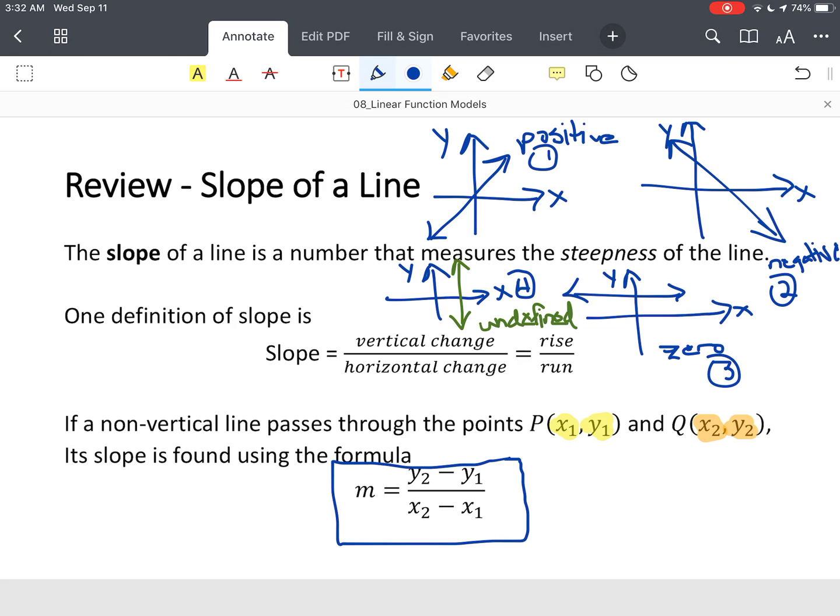Those are your four potential descriptions of the slope. Alright, so now if you plot those points and you draw that line, those are the only four possibilities that you could potentially have.